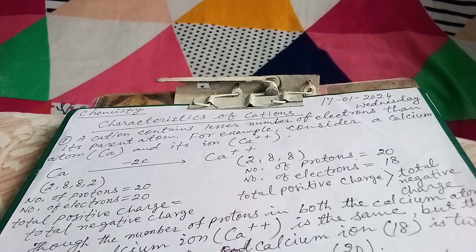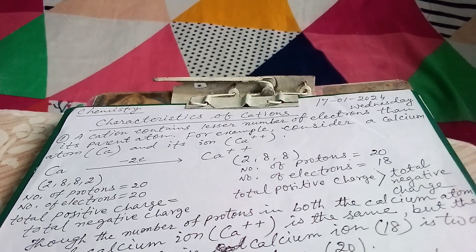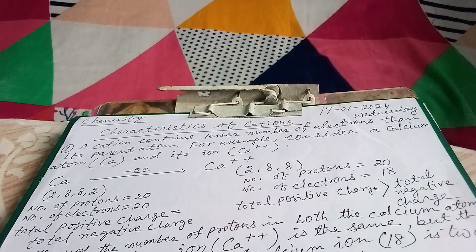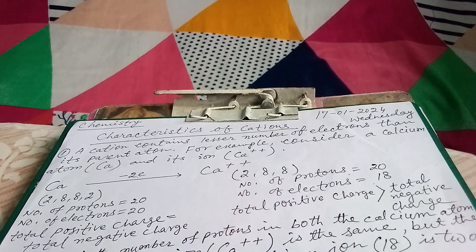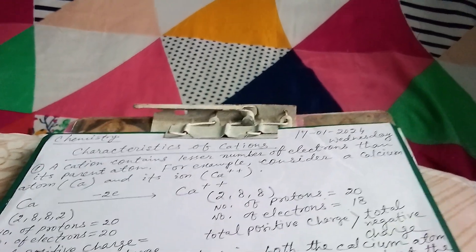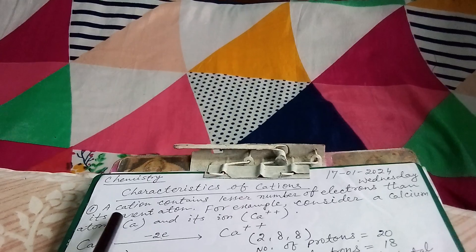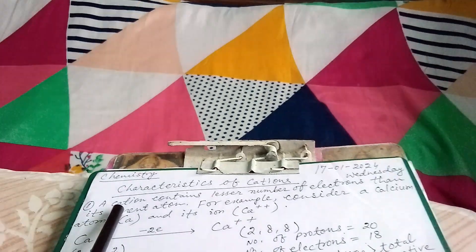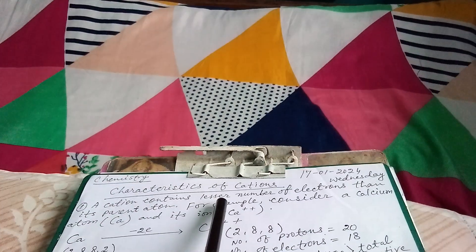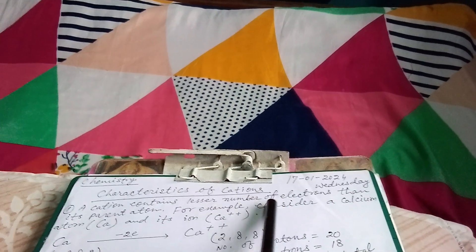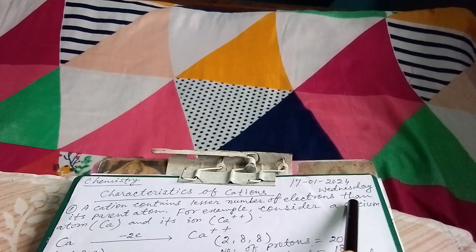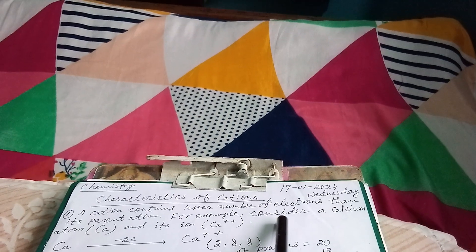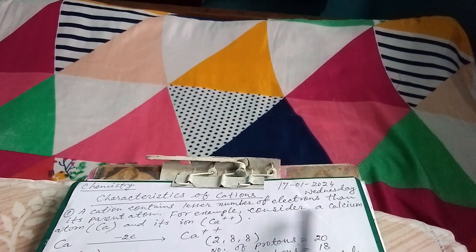Dear students, today we are going to discuss chemistry. The topic is characteristics of cations. The first characteristic of cations is that a cation contains fewer electrons than its parent atom. For example, consider a calcium atom.